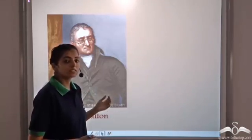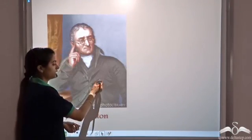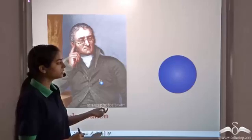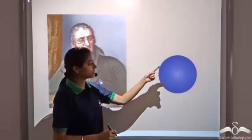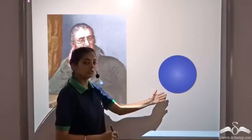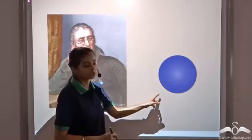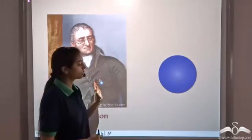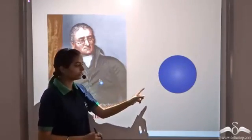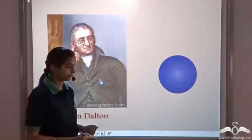John Dalton was the first scientist to give the structure of an atom. According to him, an atom is a solid hard sphere. It is electrically neutral, that is, it has no charge on it. This was the structure proposed by John Dalton — a solid hard sphere.